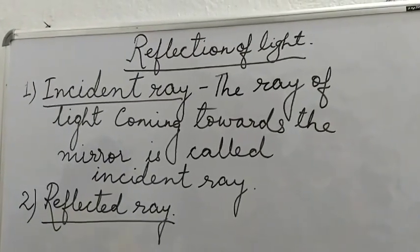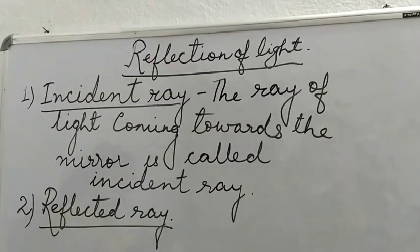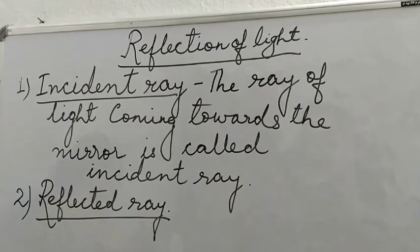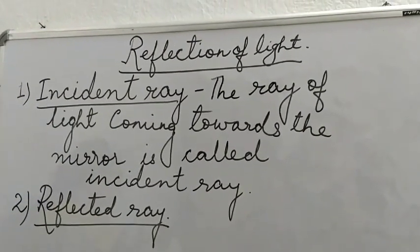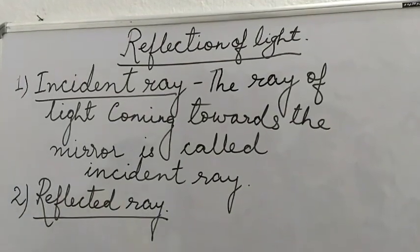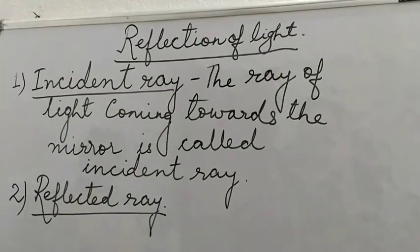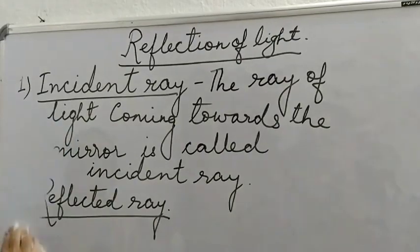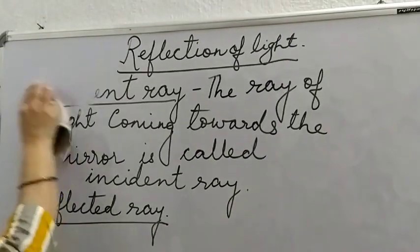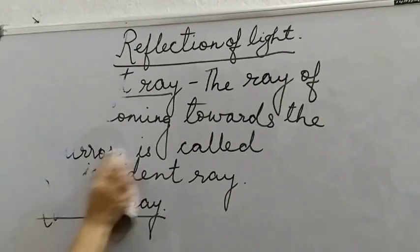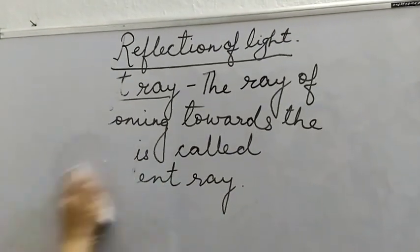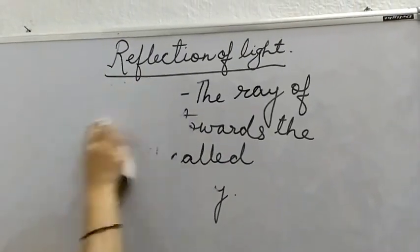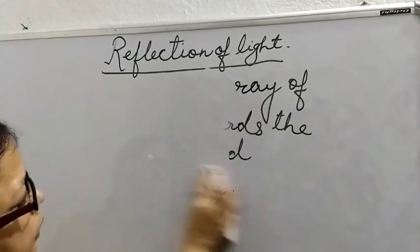Then the point of incidence — it is that point on the surface of the mirror where the incident ray falls. Now we will understand all these with the help of a diagram.